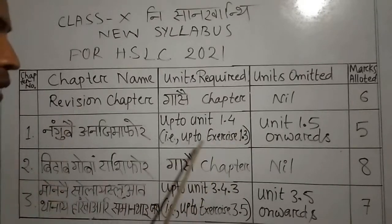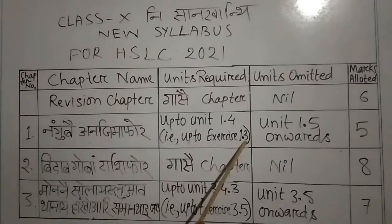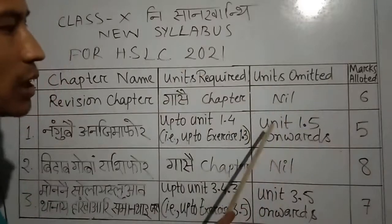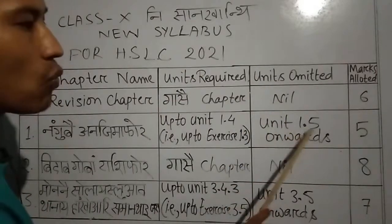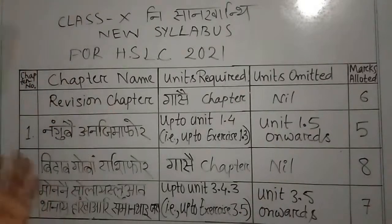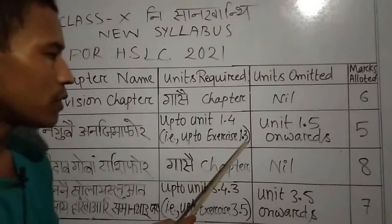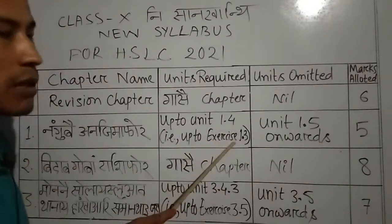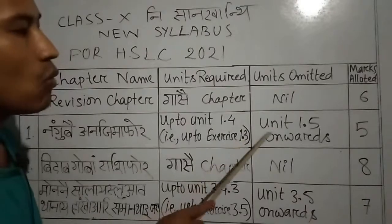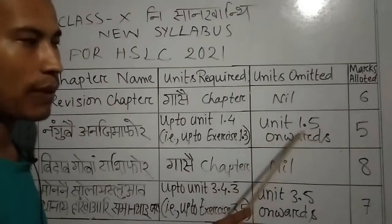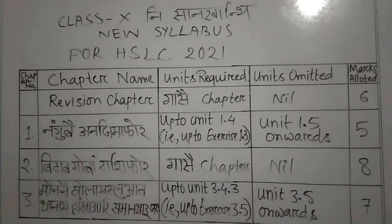If you have to do 1.3, you need to do 1.3, 1.4, and 1.5. If you need to do 1.5, you need to do 1.5. If you need to do 1.3, you need to do 1.4, which will compute to 3.5 and 5, 6.5 unit. The exercise may be done.